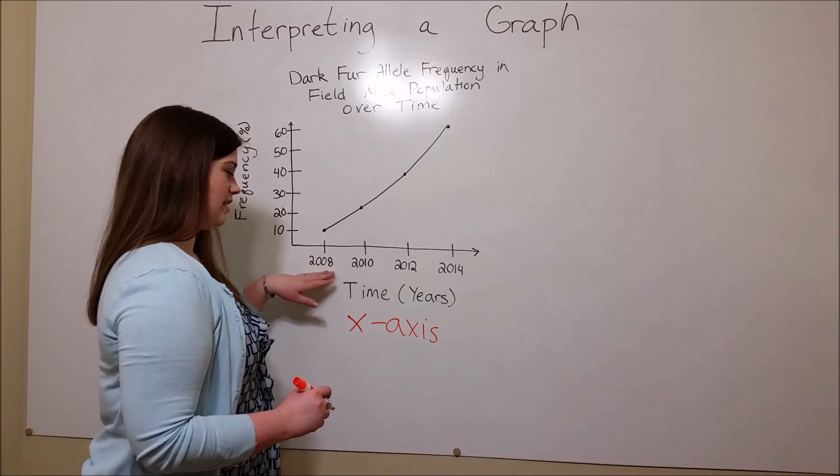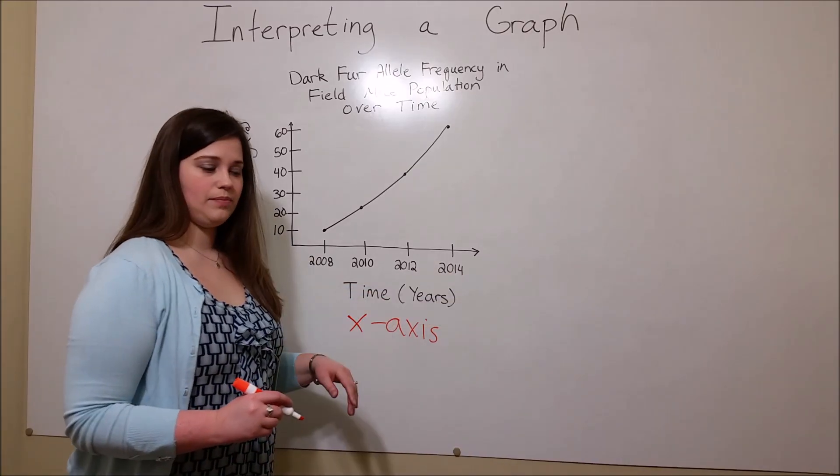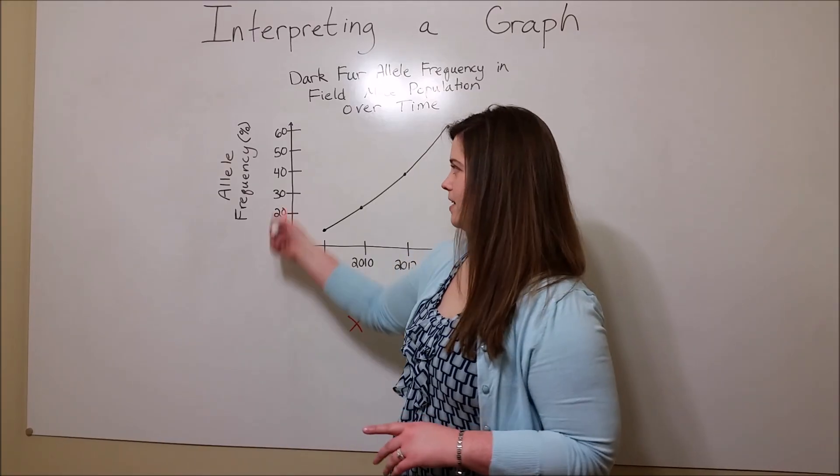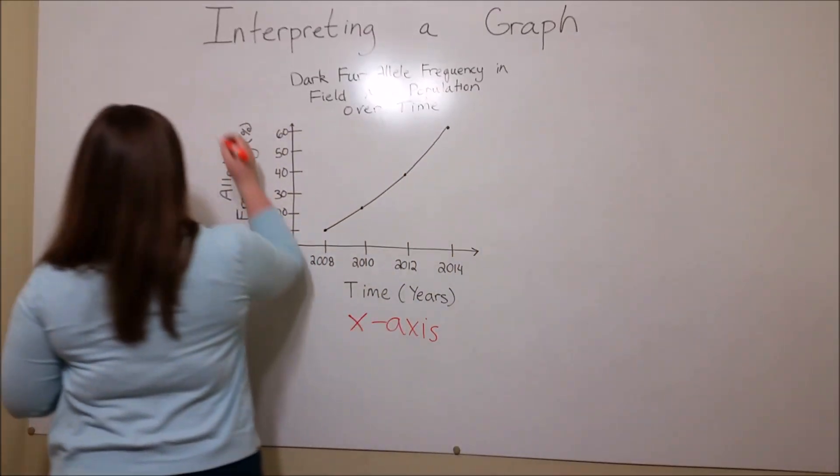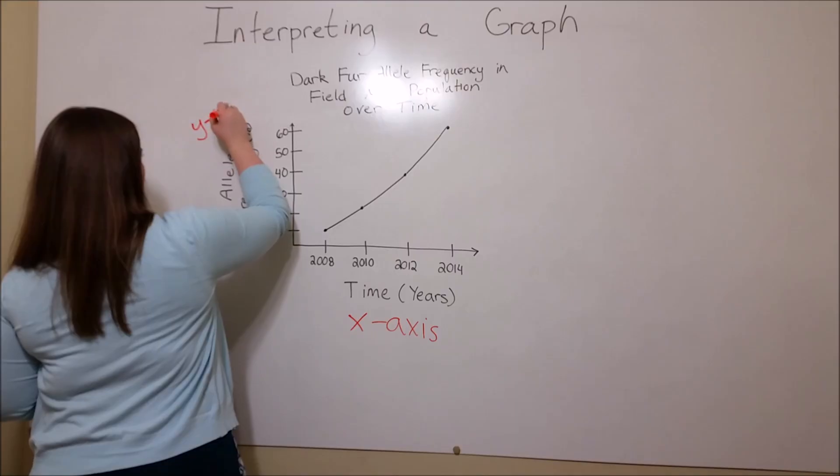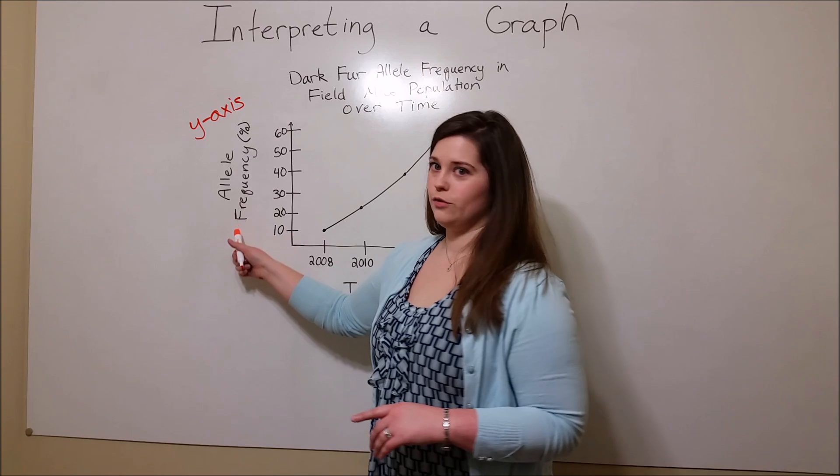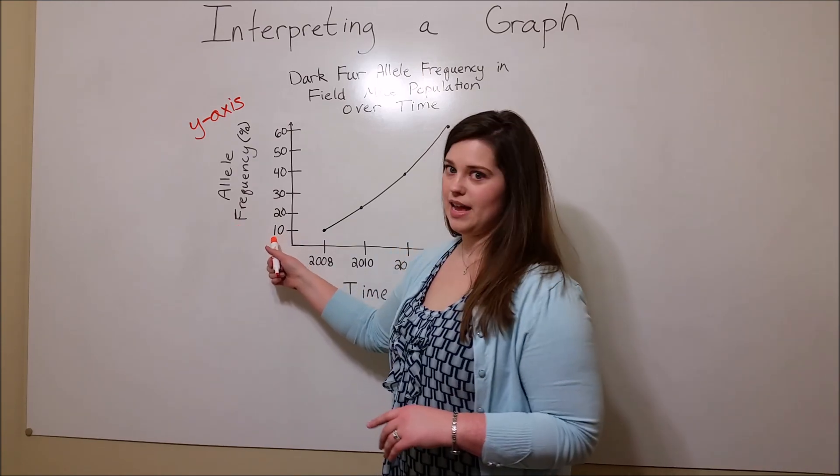Every graph also has a y-axis, that is the vertical one. This y-axis is the allele frequency expressed as a percent, here from 10% to 60%.